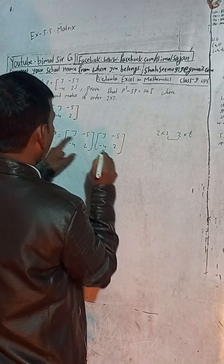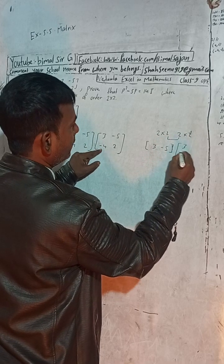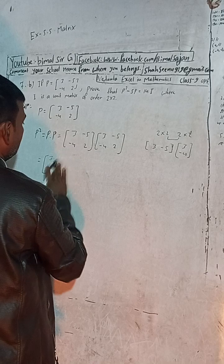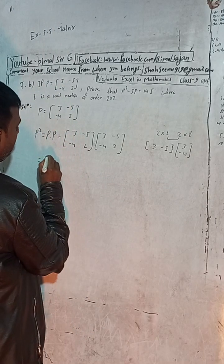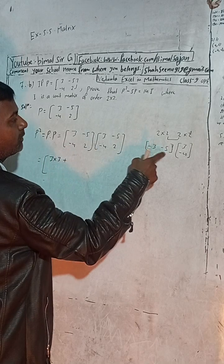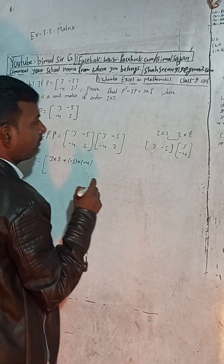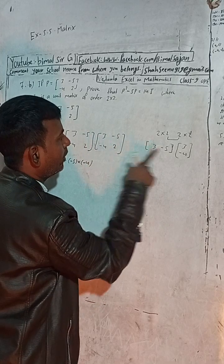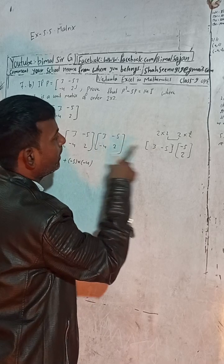While doing this multiplication, I take the first row [3, -5] and multiply by the first column [3, -4]. So the first element is: 3×3 plus (-5)×(-4). For the second element of the first row, I take the second column [-5, 2]: 3×(-5) plus (-5)×2.